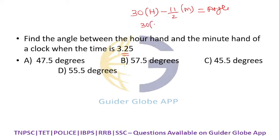30 into 3 minus 11 by 2 into - what is minutes? Minute is 25. That is equal to angle. That is 12.5.